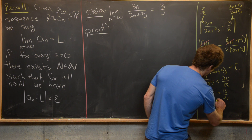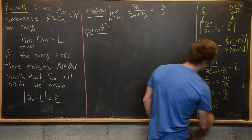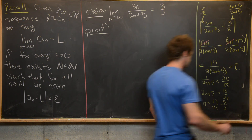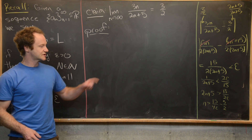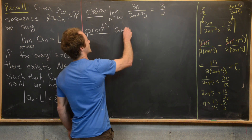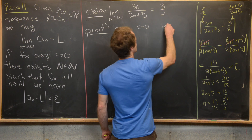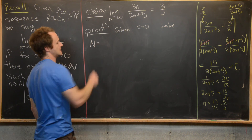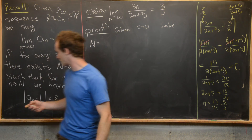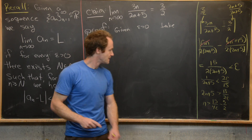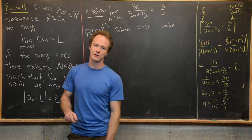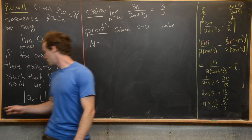Subtracting 5 from both sides and dividing by 2 gives n greater than 15 over 4epsilon minus 5/2. Now we can launch into the proof. Given epsilon greater than zero, take capital N to be the ceiling of 15 over 4epsilon minus 5/2, plus 1, tweaking it slightly so it works with our non-strict inequality and ensures we have a natural number.